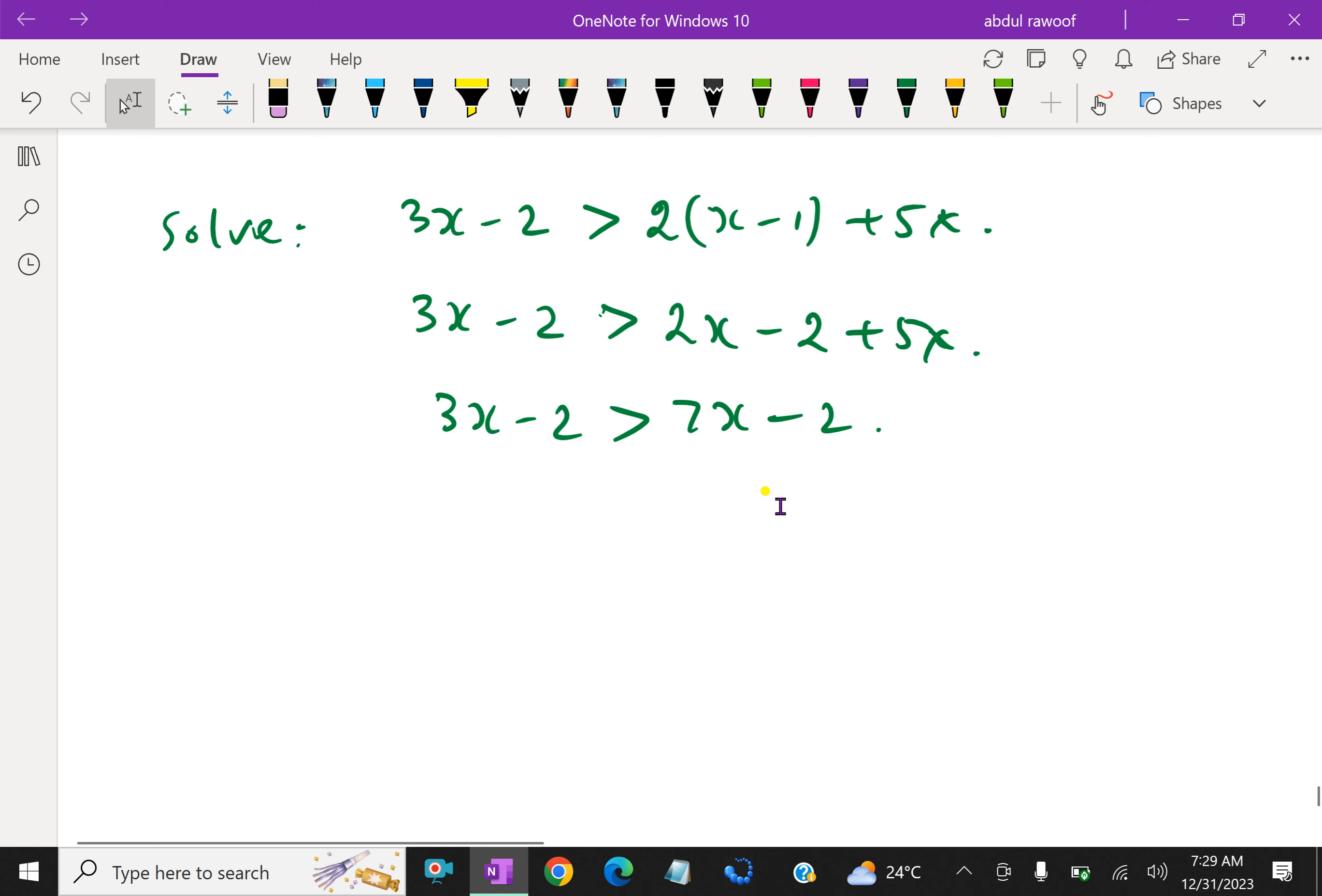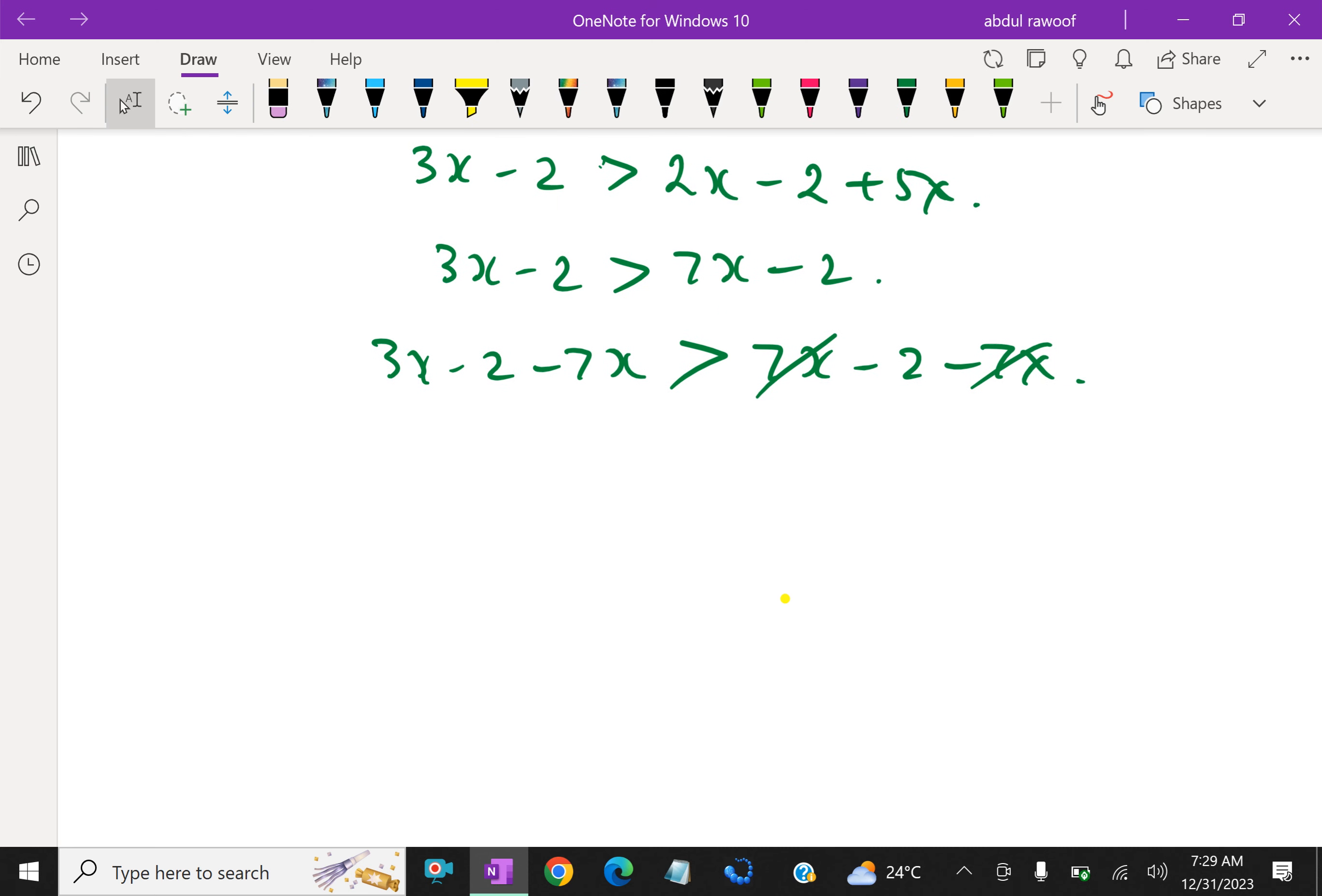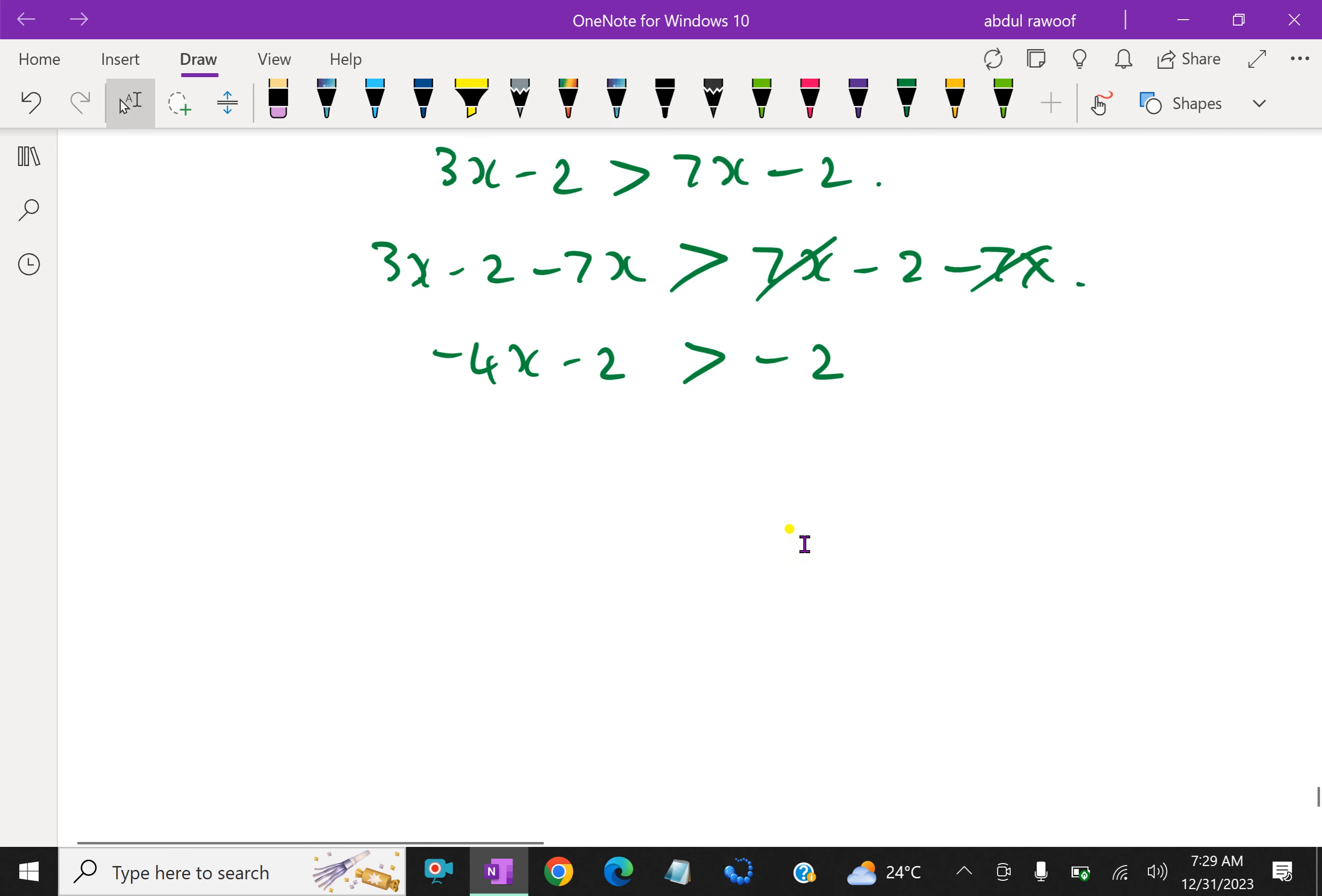Then subtracting 7x from both sides. 3x minus 2 minus 7x, this 7x and this 7x cancel. Then 3x minus 7x is minus 4x, minus 2 is minus 2. Then adding 2 to both sides.